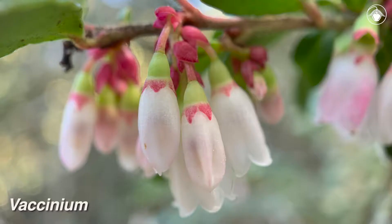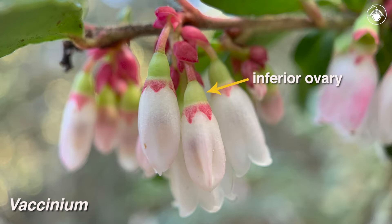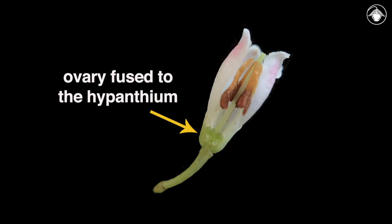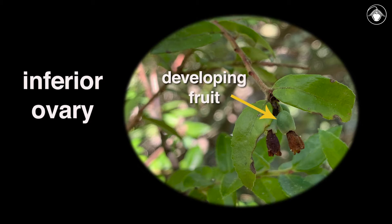In California, a characteristic that distinguishes the genus Vaccinium from other woody Ericaceae genera is that Vaccinium has an inferior ovary. In this dissected flower, you can see that the ovary is fused to the hypanthium, or floral cup. And here in the developing fruit, you can see evidence of an inferior ovary — this is one way to tell Vaccinium from other woody members of the Ericaceae.